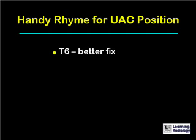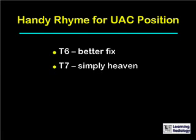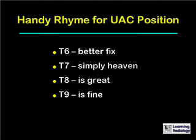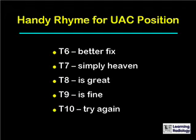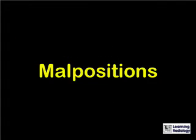Here's a handy rhyme to remember the correct positioning for the umbilical arterial catheter: T6 — better fix. T7 — simply heaven. T8 is great. T9 is fine. T10 — try again. That's not original to me. Here are some examples of malpositioning of umbilical arterial or umbilical venous catheters.